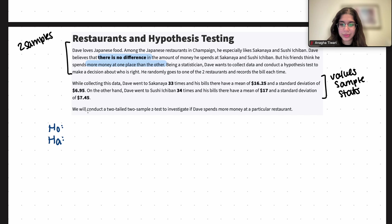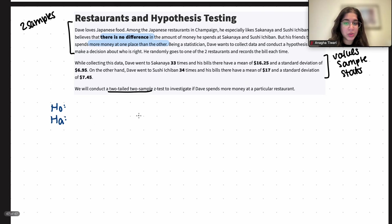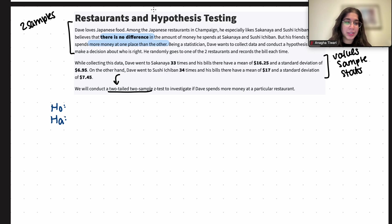Now it says we will conduct a two-tailed, two-sample z-test to investigate if Dave spends more money at a particular restaurant. Why is it two-tailed? It's because his friends think he spends more money at one place than the other. So the alternative hypothesis does not specify a side — it doesn't specify which restaurant we're going to be spending more money on. It's just that we think there is a difference, but we don't know what place that is. So that's why it's two-tailed.